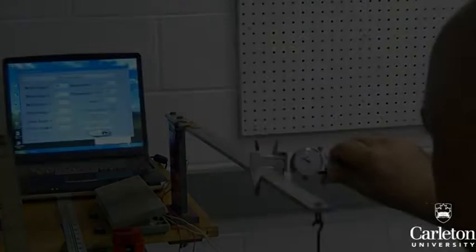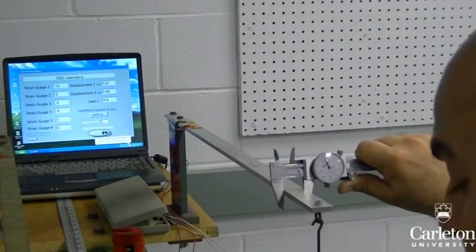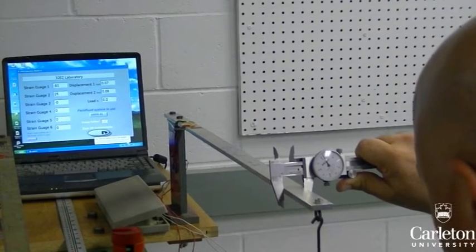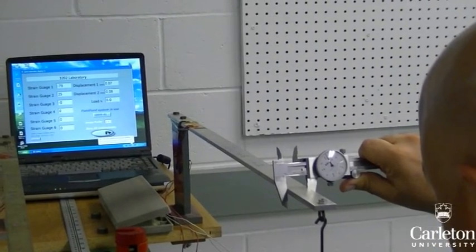Before you can begin, you'll need to accurately measure the dimensions of each beam. Use calipers to measure the width or b of each beam. We are measuring the aluminum beam first. This reading is 25.15 millimeters.